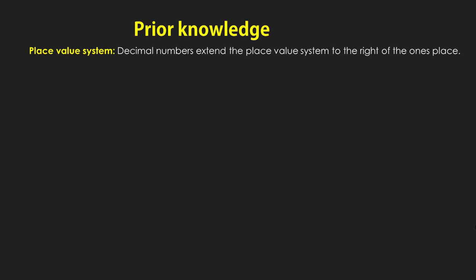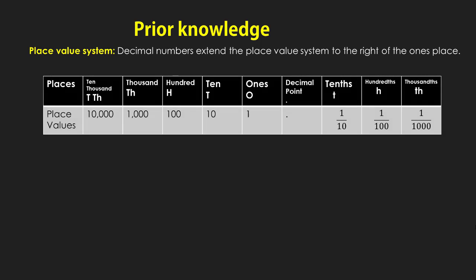Place value system: decimal numbers extend the place value system to the right of the ones column. Look at the table carefully — we can see that after the ones column, the decimal number extends the columns toward the right side. After the decimal point, we can see the tenths, hundredths, and thousandths columns.